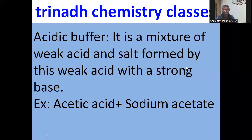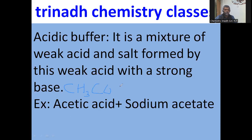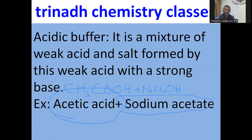What is an acidic buffer? An acidic buffer is a mixture of a weak acid and the salt formed by this weak acid with a strong base. For example, acetic acid is a weak acid. When acetic acid is treated with a strong base such as sodium hydroxide, the salt of this weak acid is formed — that is sodium acetate. So the mixture of the weak acid and the salt formed by this weak acid with a strong base is called an acidic buffer.